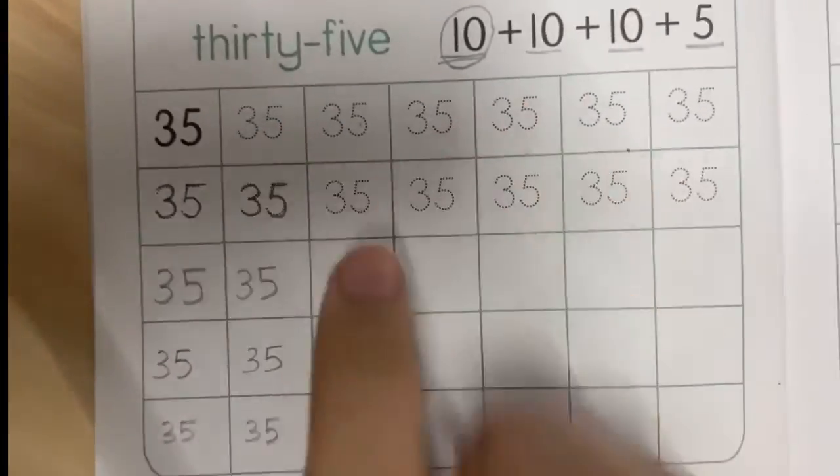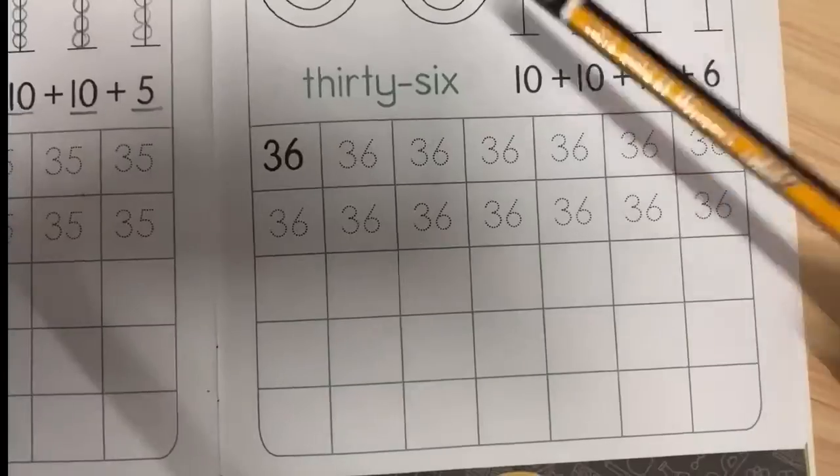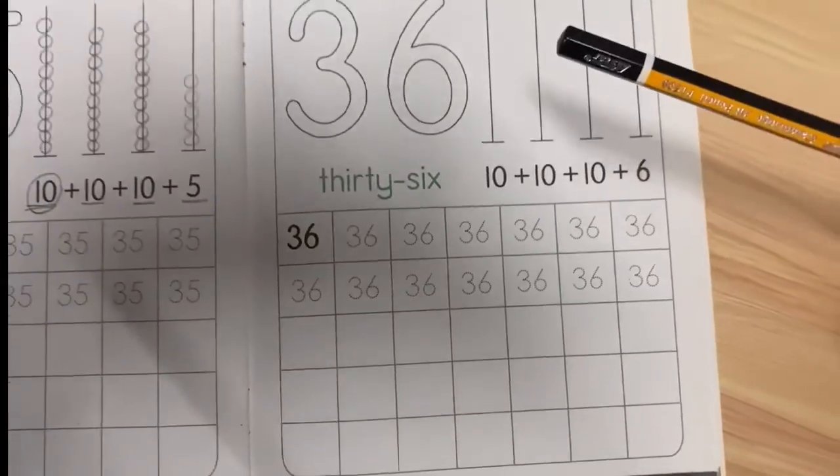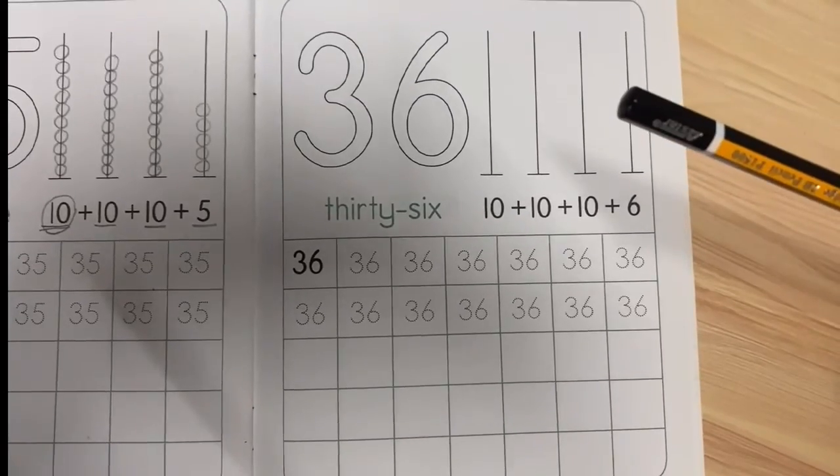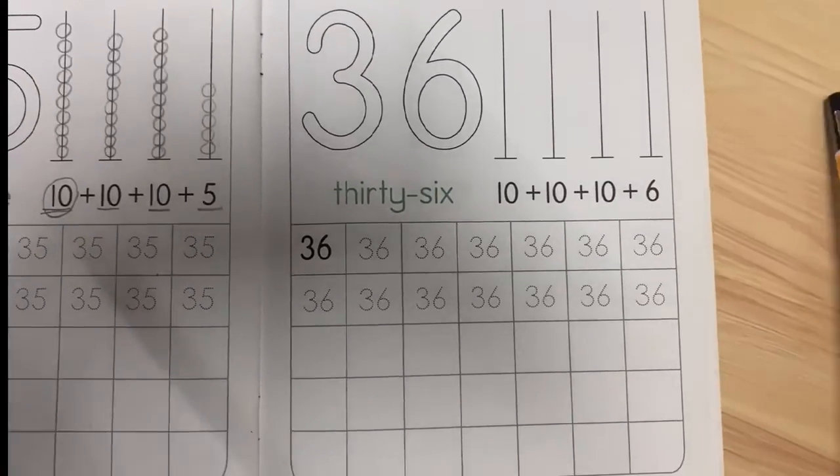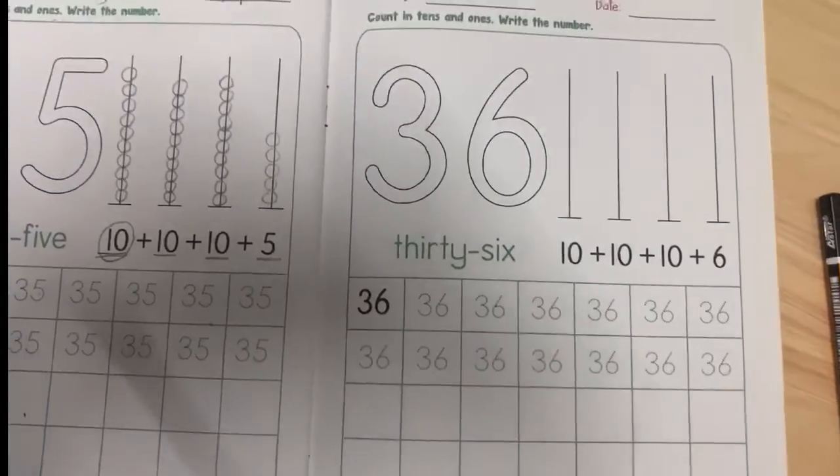Okay, complete. And this one, you complete by yourself. Don't forget to do number 36 also with your mama and daddy, okay?